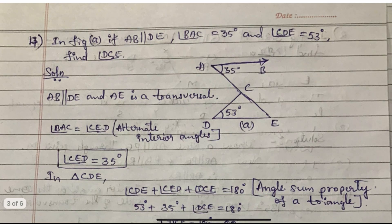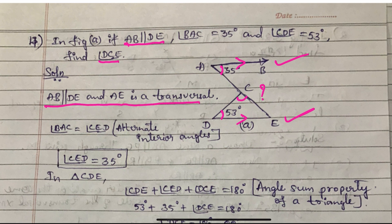Another important problem: AB is parallel to D. Angle A is given as 35 degrees and angle D is given as 53 degrees. Find angle DCE. Since AB is parallel to D and AE is a transversal line, we can say the two alternate angles are equal — that is 35 degrees.